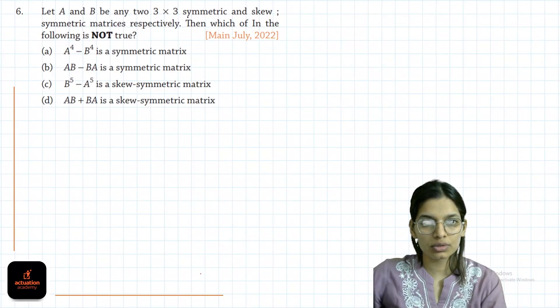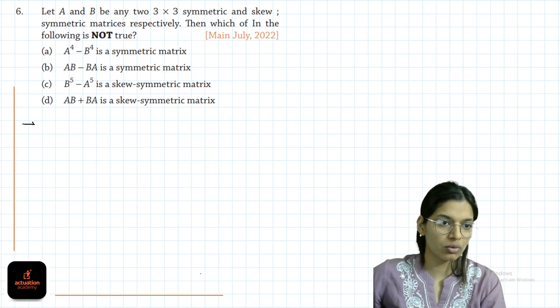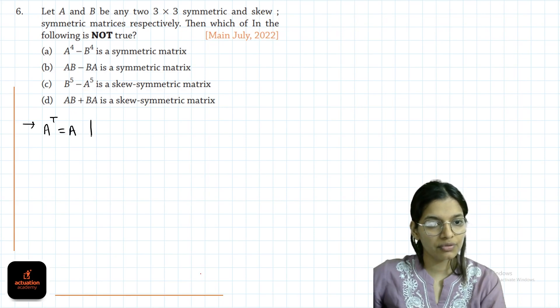Let A and B be any two 3 cross 3 symmetric and skew symmetric matrices. What is given to us? A is symmetric, that means A transpose is A. And if B is skew symmetric, B transpose will be minus of B.